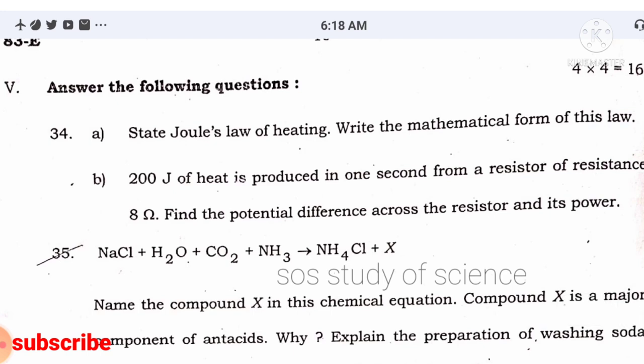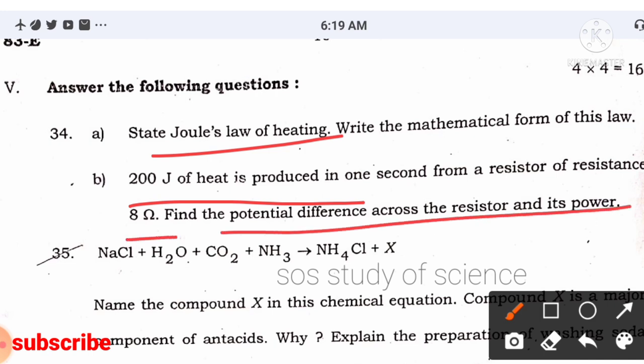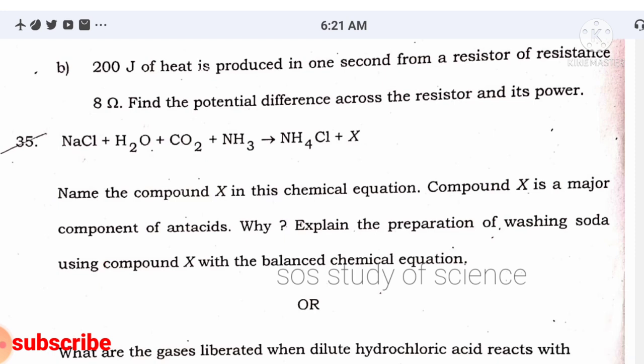Question 34: state Joule's law. Either Joule's law or Ohm's law will be asked — prepare both. Write the mathematical form of the law. Then solve: 200 joules of heat is produced in 1 second from a resistor of 8 Ω — find the potential difference across the resistor and its power. Write the given and apply the formula.